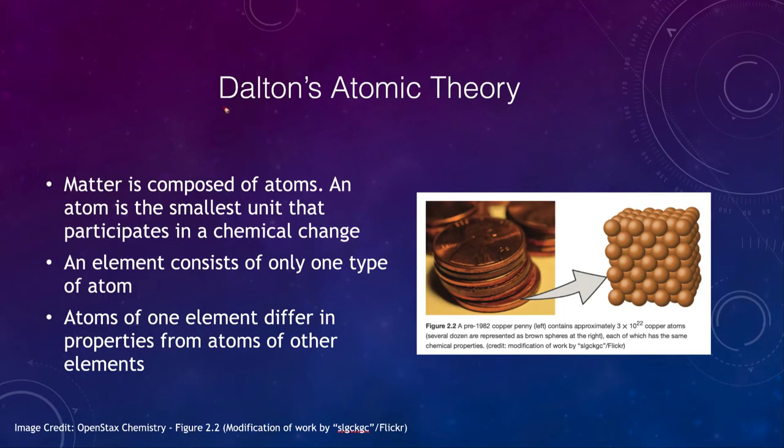First thing we're going to look at is Dalton's atomic theory. And that states that matter is made up of atoms. So atoms have been thought of for a long time, but it's not something that we have to have really known the exact details of. So how small can we divide something? So if we take a copper coin here, and we then divide it up,